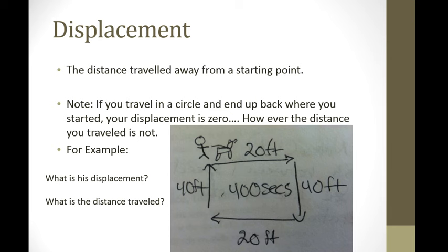And this brings us to the idea of displacement. Displacement is the distance traveled away from a starting point. And I want to make this difference very clear. Displacement and distance are not exactly the same. Because if you travel around in a circle and wind up back where you started, your displacement is zero. According to this, if we're looking strictly at the definition, and we should be, this is the distance traveled from the starting point.